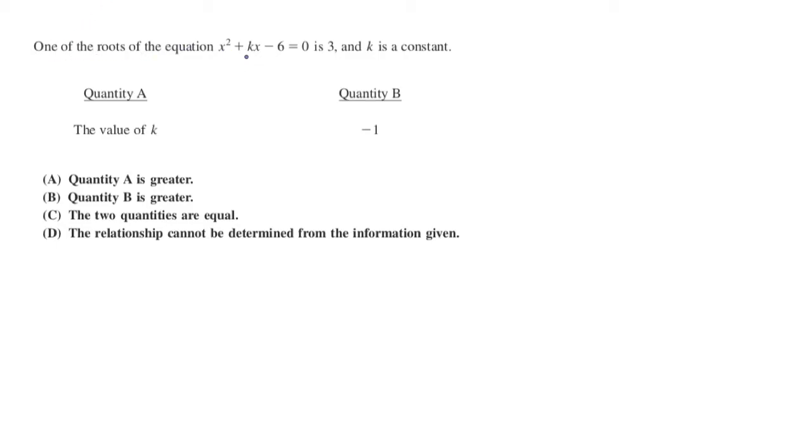One of the roots of the equation x squared plus kx minus 6 equals 0 is 3. One of the roots is 3, and k is a constant.